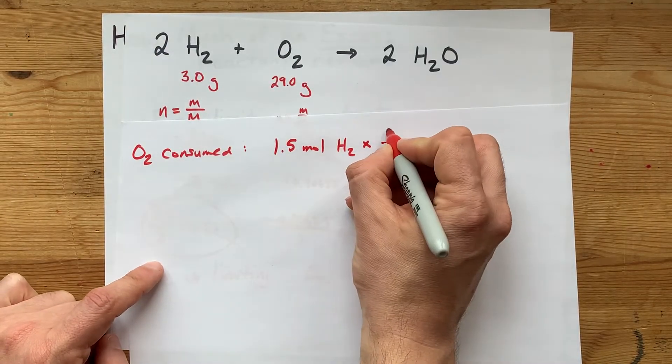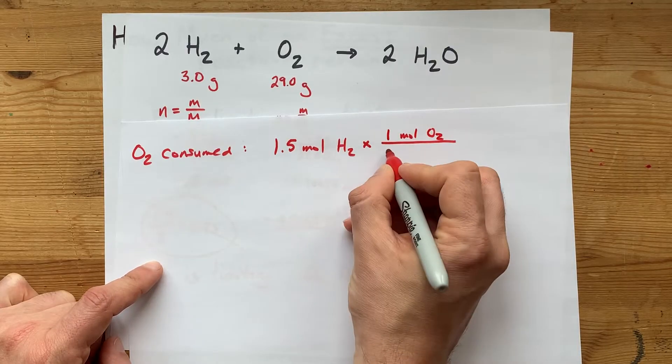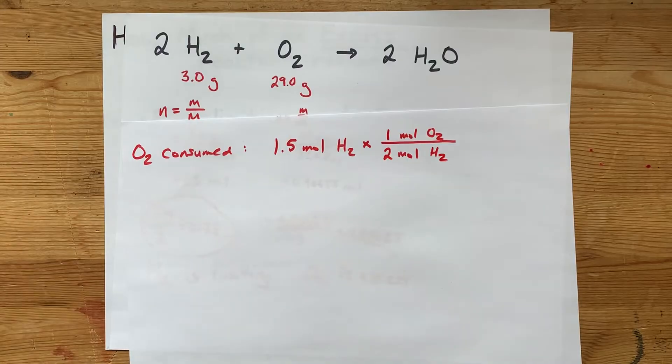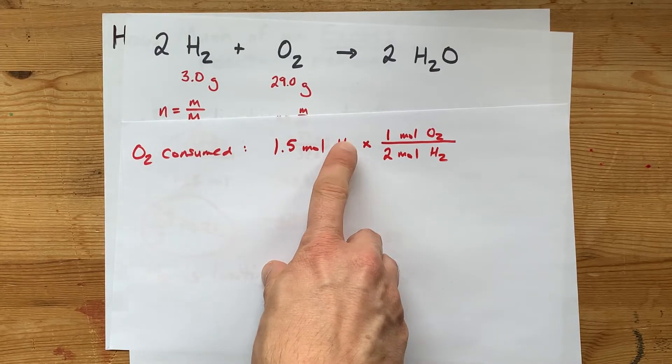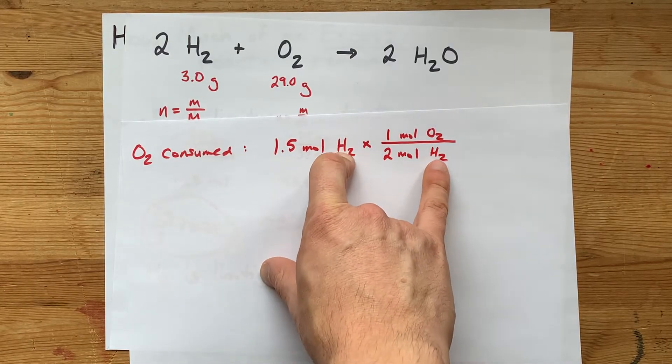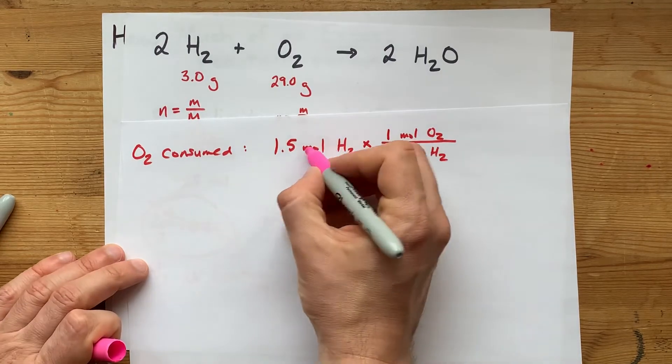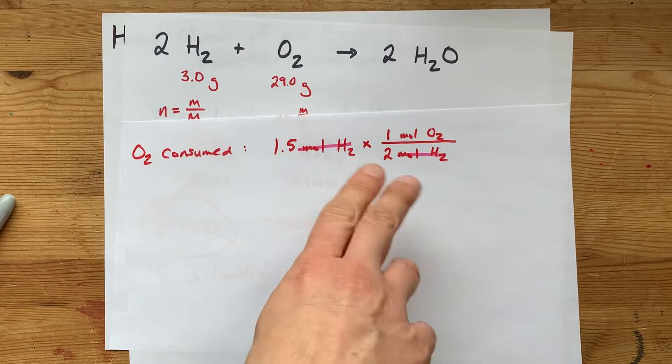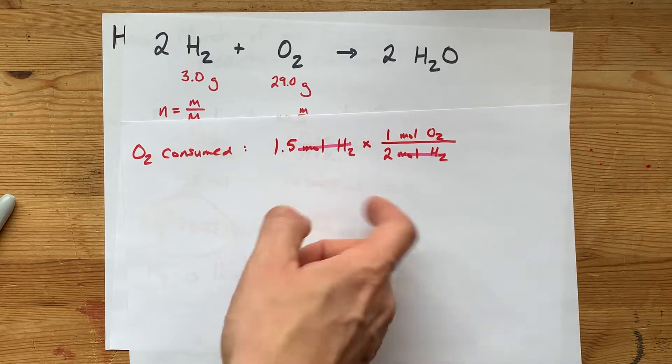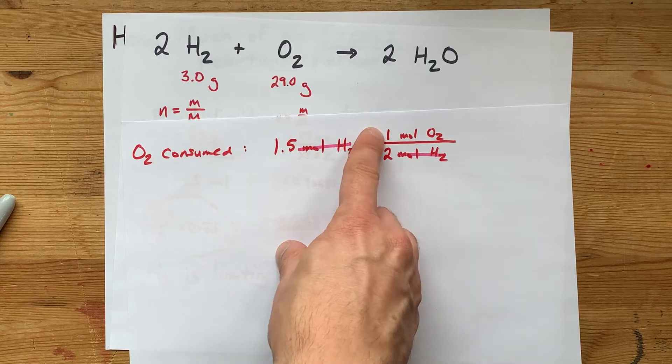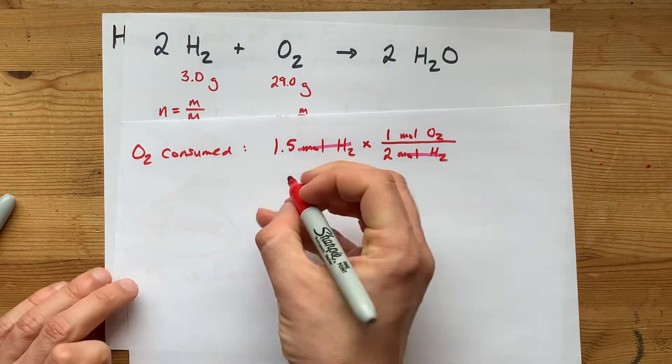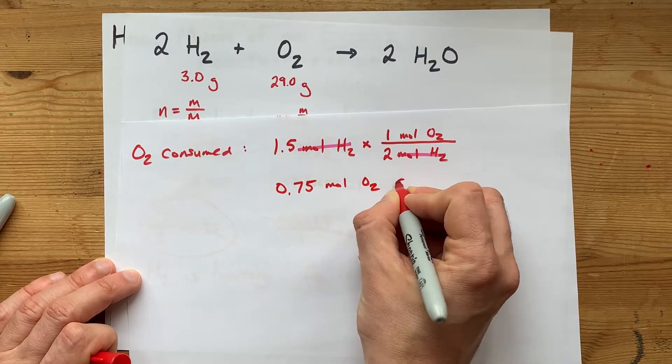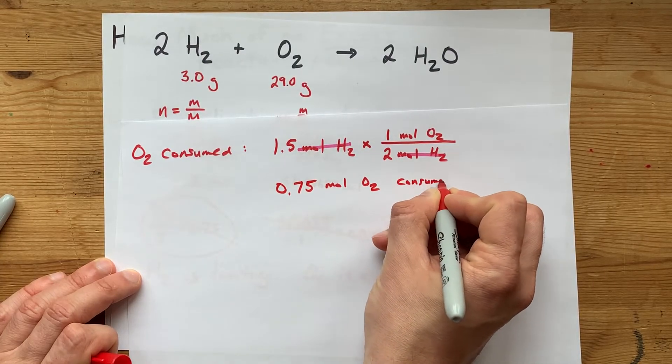This is 1 mole of O2 for every 2 moles of H2. And I'm just making sure that the limiting reactant is in the denominator of this mole ratio here. The moles of H2 as a unit cancel each other out. And what I'm left with is moles of O2. 1.5 times 1 divided by 2 gives me 0.75 moles of O2 that is actually used up.